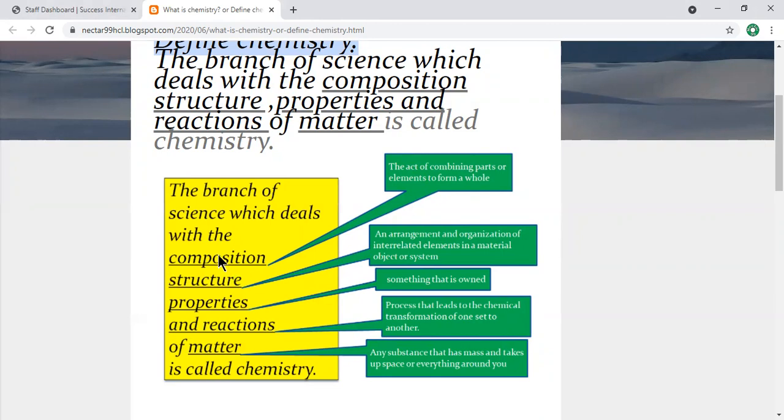What we do in it? You can see here the meaning of composition. What is the meaning of composition? The act of combining parts or elements, or atoms or elements, to form a whole. For example, you drink water.